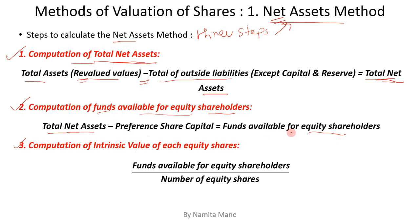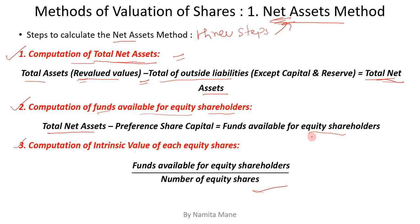After getting funds available for equity shareholders, the third step is computation of intrinsic value of each equity share: funds available for equity shareholders divided by number of equity shares. To summarize: calculate total net asset, less preference share capital to get funds available for equity shareholders, then divide by number of equity shares to get intrinsic value of each equity share.